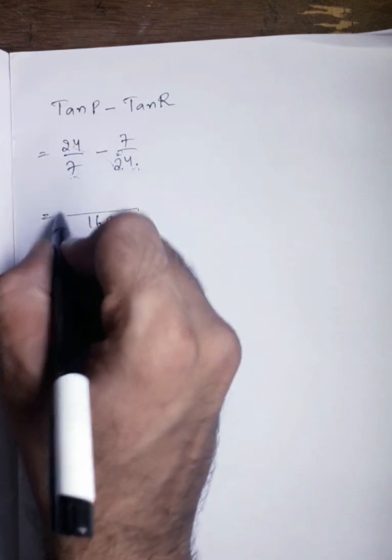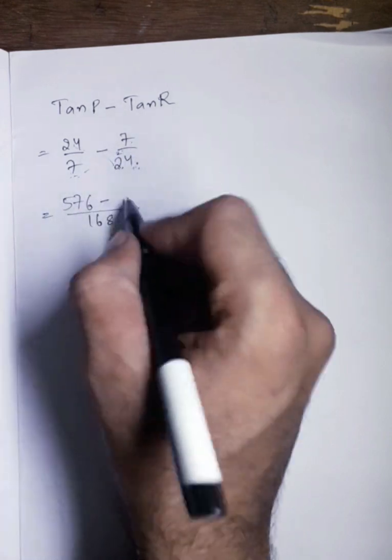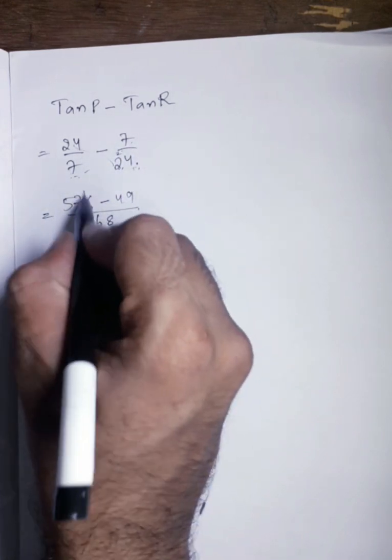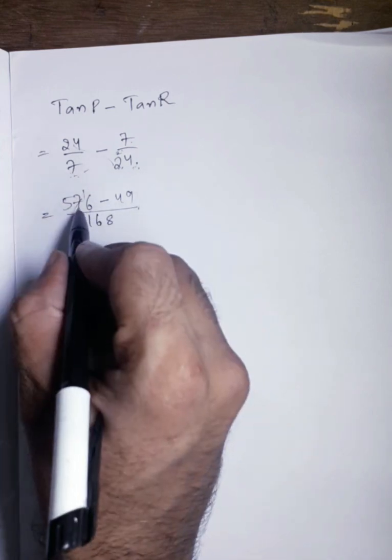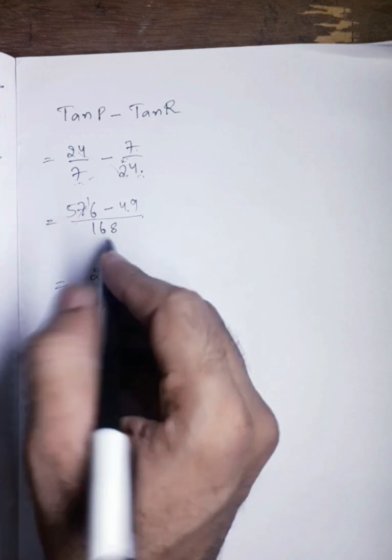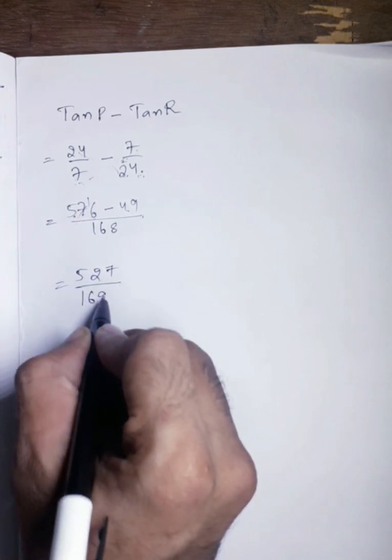24 times 24 is 576 minus 7 times 7 is 49. 576 minus 49 is 527. 527 by 168.